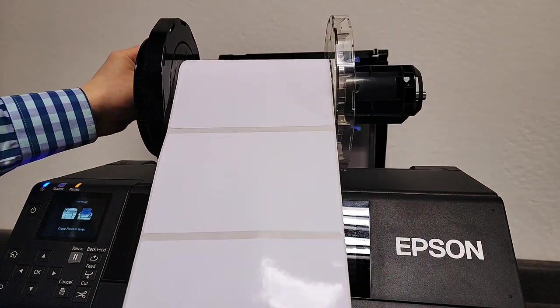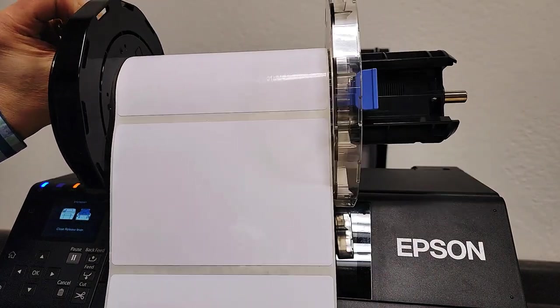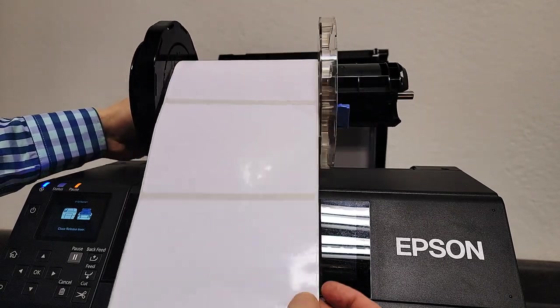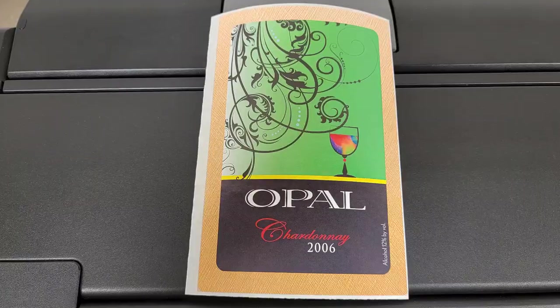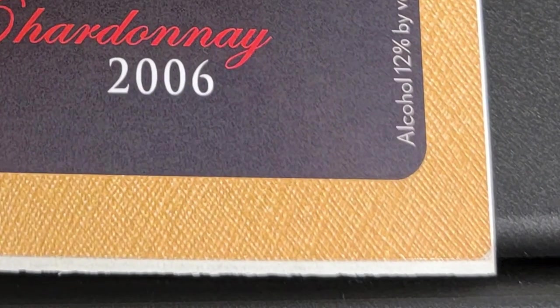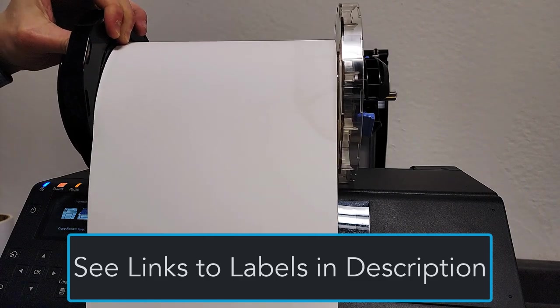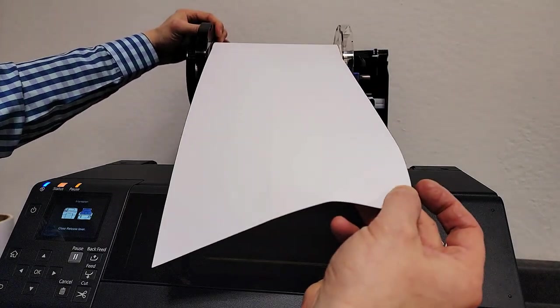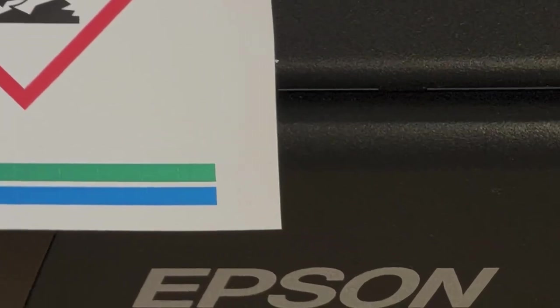First of all, I just want to show here the difference between die cut labels and continuous labels. With the die cut labels, the labels are pre-cut already on the roll. You can see here on the corners, they're round, and this is a continuous roll. So when we say continuous labels, the roll is continuous, the machine will cut the labels to size, and you can see down here, there's square corners.